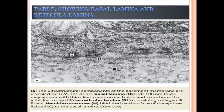This photomicrograph shows the basal lamina and the reticular lamina — the two parts of your basement membrane. The basement membrane is made up of two parts: the basal lamina, which is the upper part where epithelial cells lie, and the reticular lamina, which is the inferior part.